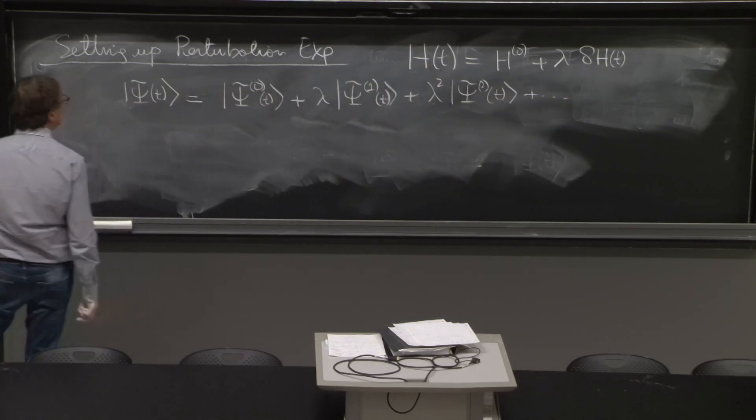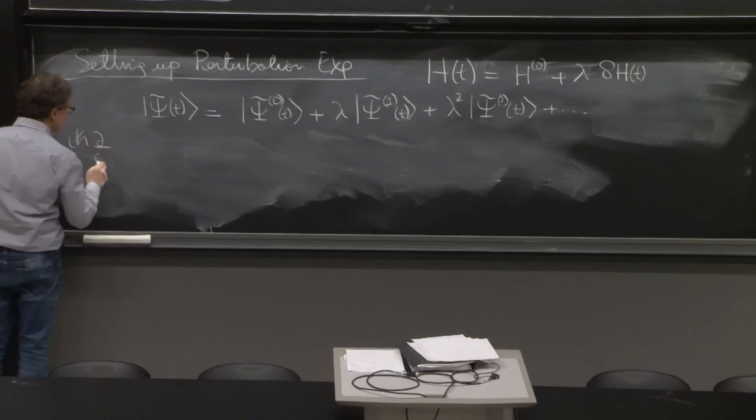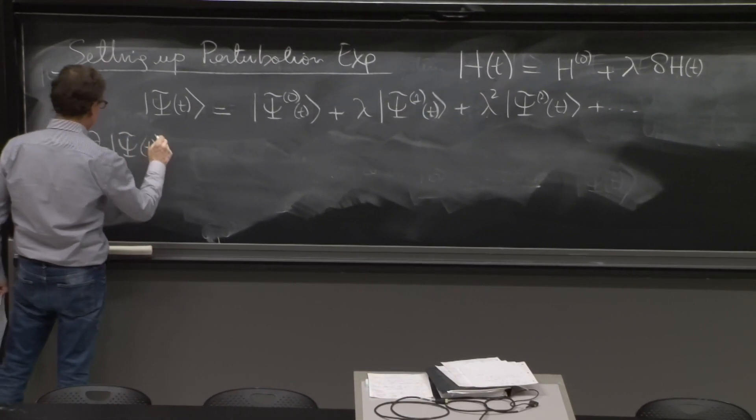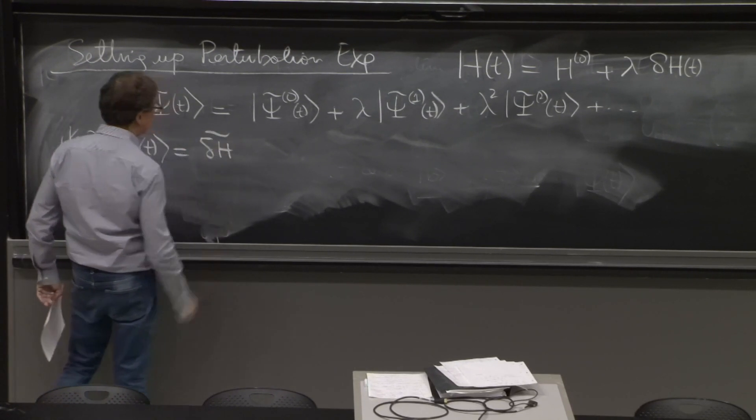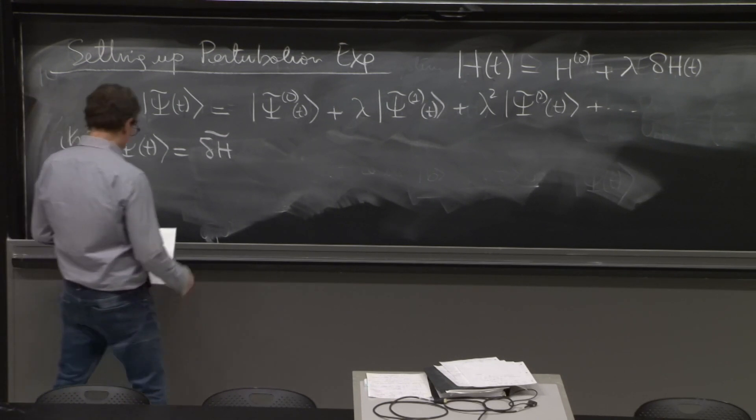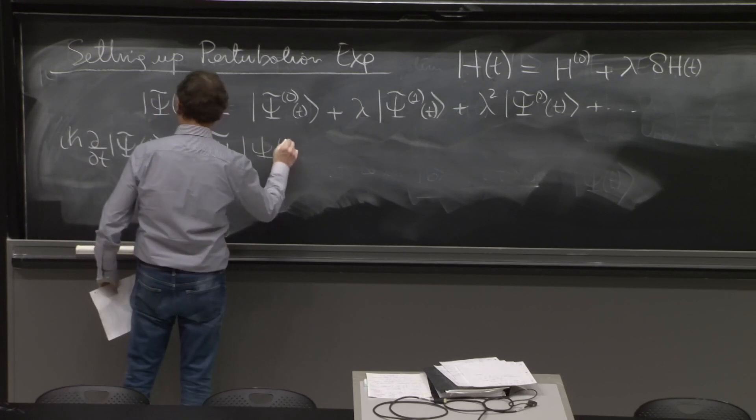And what was our Schrodinger equation? Our Schrodinger equation was i h bar d dt of psi tilde of t was delta h, like that, times psi of t.